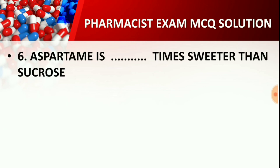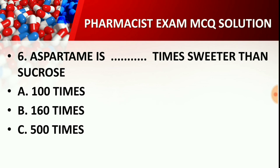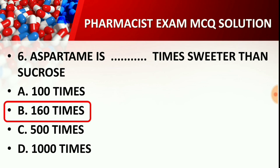Question number 6: Aspartame is how many times sweeter than sucrose? Option A: 100 times, Option B: 160 times, Option C: 500 times, Option D: 1000 times. The correct answer is Option B — 160 times. Aspartame is 160 times more sweet than sucrose. Sucrose is taken as the standard, and other sweeteners' sweetness potency is compared against it. This type of question can also be asked in competitive exams.